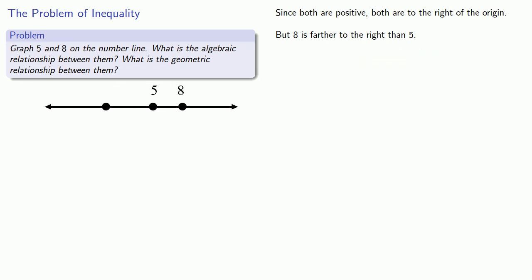We want to say something about the relationship between 5 and 8 both algebraically and geometrically. Algebra is all about formulas and symbols and equations and variables, and the inequality we might write here is that 5 is less than 8. Geometry, on the other hand, is about pictures. If we look at our picture, we see that 5 is to the left of 8.